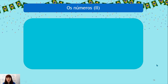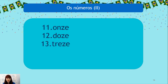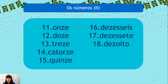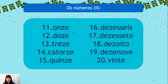The numbers 11 to 20: onze, doze, treze, quatorze, quinze, dezesseis, dezessete, dezoito, dezenove, vinte. These numbers are irregular — you just need to know them. However, dezesseis through dezenove are regular because they combine dez with the unit: dez e seis = sixteen, and so on.